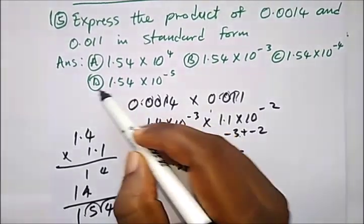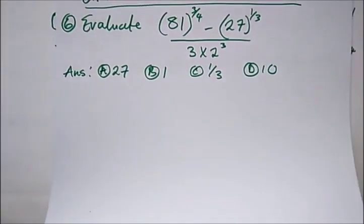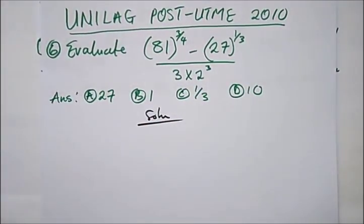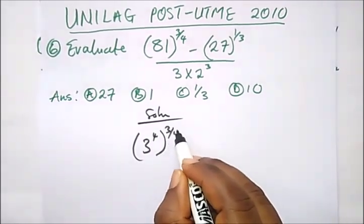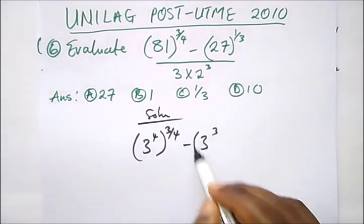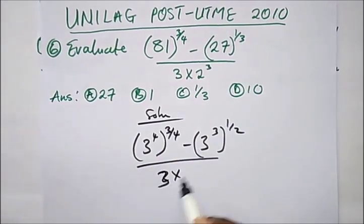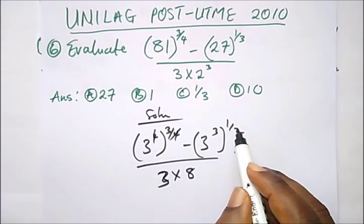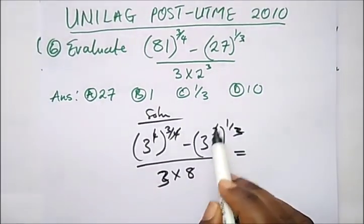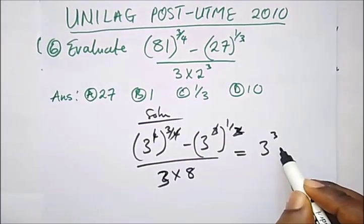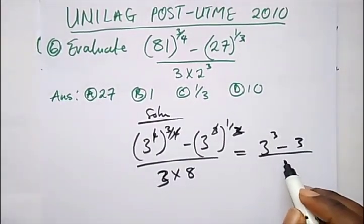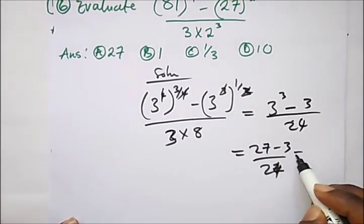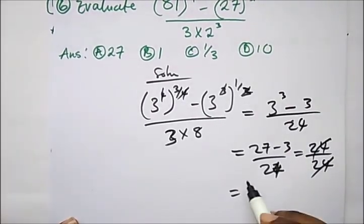Question 6: evaluate this indices expression. We can write 27 as 3³, and simplify using index laws. The powers cancel, leaving 3³ minus 3 over 24, which is 27 minus 3 over 24, giving 24 over 24, which equals 1. The correct option is option B.